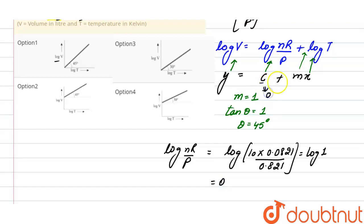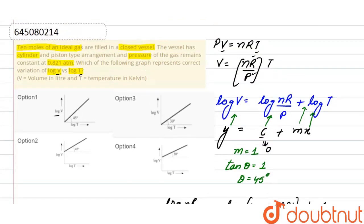Now we will find which graph is correct. First of all, the intercept must equal 0. In options 2 and 4, we have a non-zero intercept in the graph, so options 2 and 4 are incorrect.